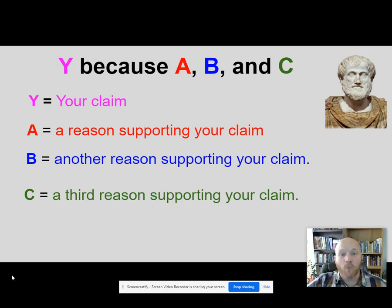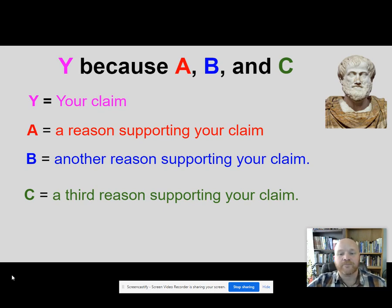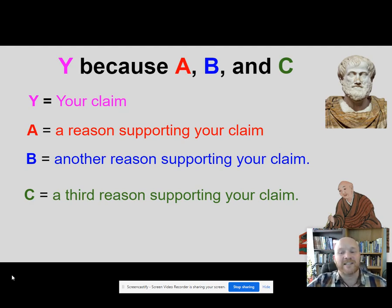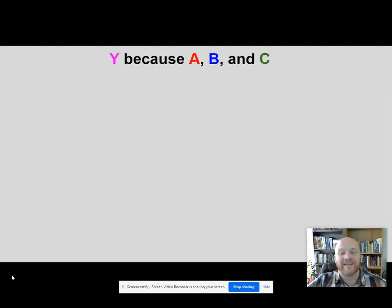So your Y is a claim and the A, B, and C are actually your three best arguments you can think of that support that claim. Interestingly, if you go to college in the west we always write it this way, but in Japan it's considered rude and unsophisticated to just come out and state your argument. In the west though, we like to get right to the point when we're making arguments, so let's do an example thesis.